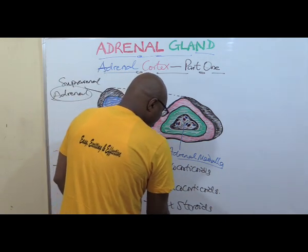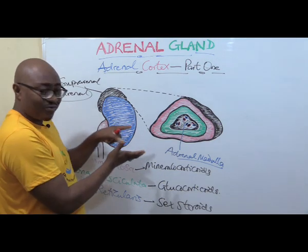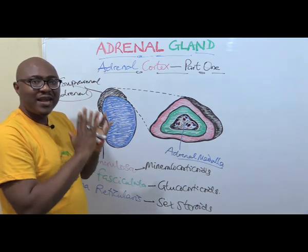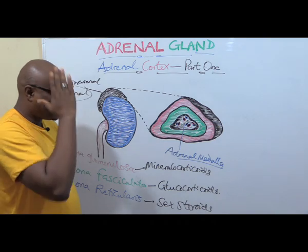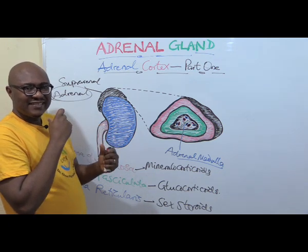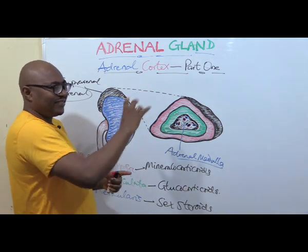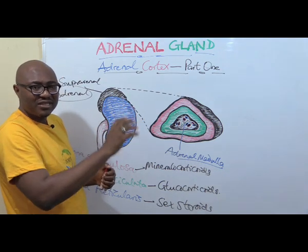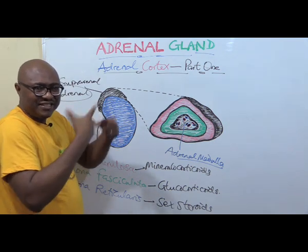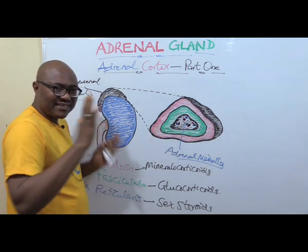These are steroids — mineralocorticoids — because they come from the cortex. Being steroids means they are synthesized from cholesterol. You know about steroids: they have intracellular receptors. They don't have plasma membrane receptors. They go straight into the cytoplasm and then to the nucleus to engineer protein synthesis, which produces several proteins that now affect physiological function.